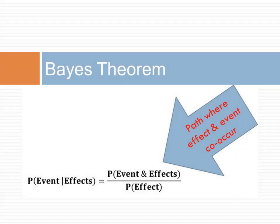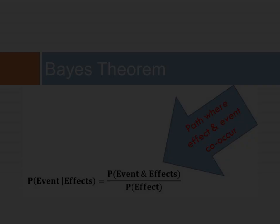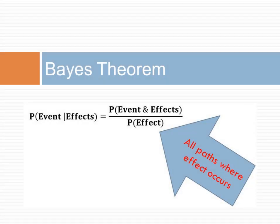The tree diagram can be used to calculate the Bayes' theorem. The top part of the equation is the path where both the effect and the event co-occur. The bottom part is all paths where the effect occur.